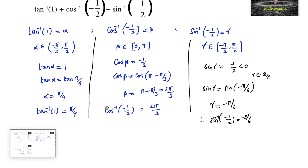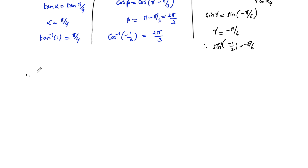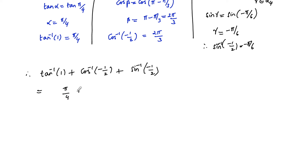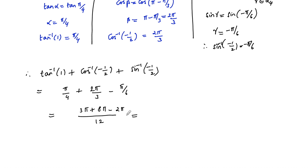Therefore, tan inverse of 1 plus cos inverse of minus 1 by 2 plus sin inverse of minus 1 by 2 equals pi by 4 plus 2 pi by 3 minus pi by 6. Taking LCM of 4, 3, and 6, which is 12, this becomes 3 pi plus 8 pi minus 2 pi all over 12, which equals 9 pi by 12. Simplifying by cancelling 3, we get 3 pi by 4. So the answer is 3 pi by 4.